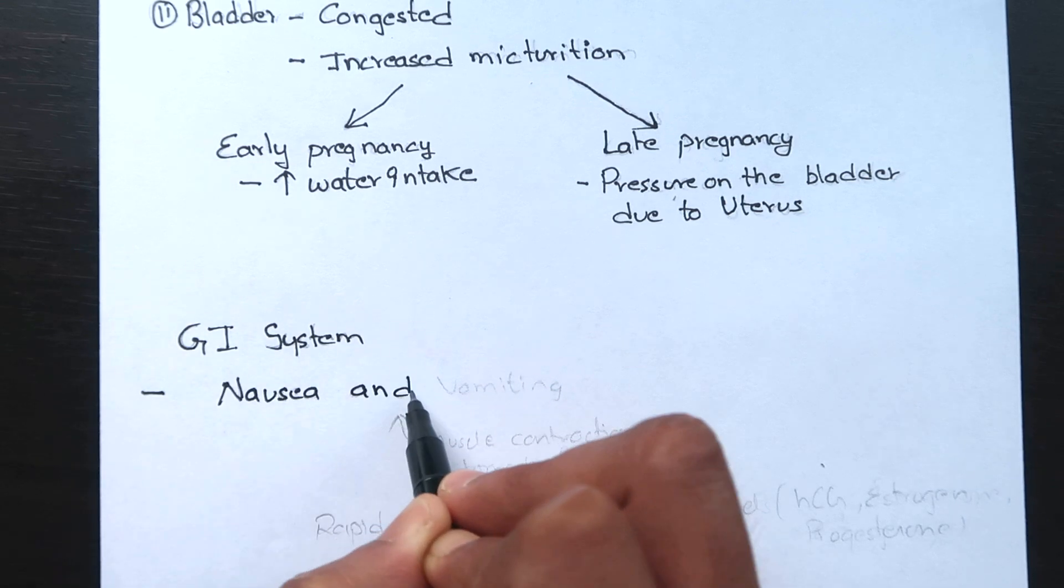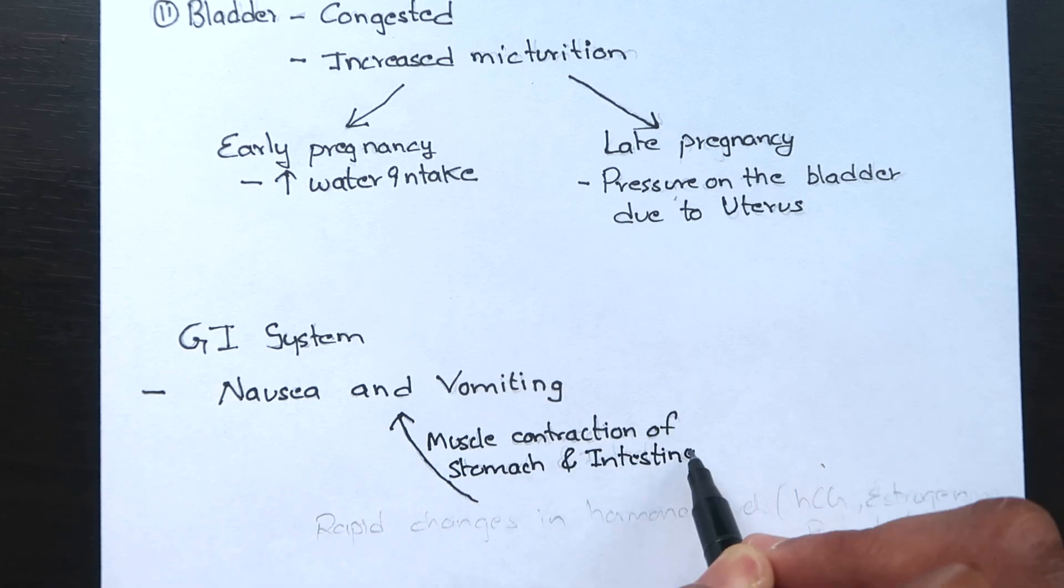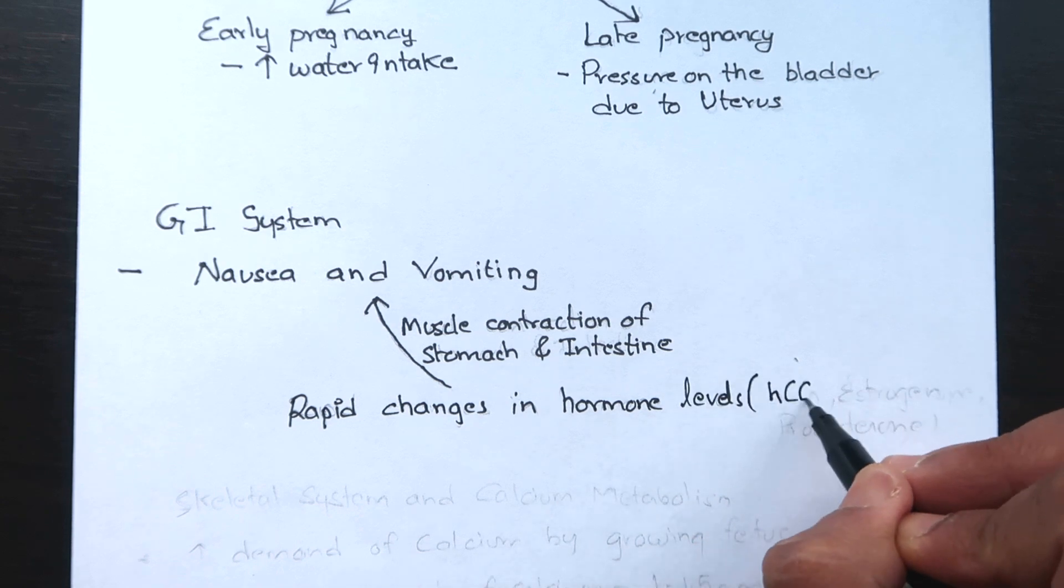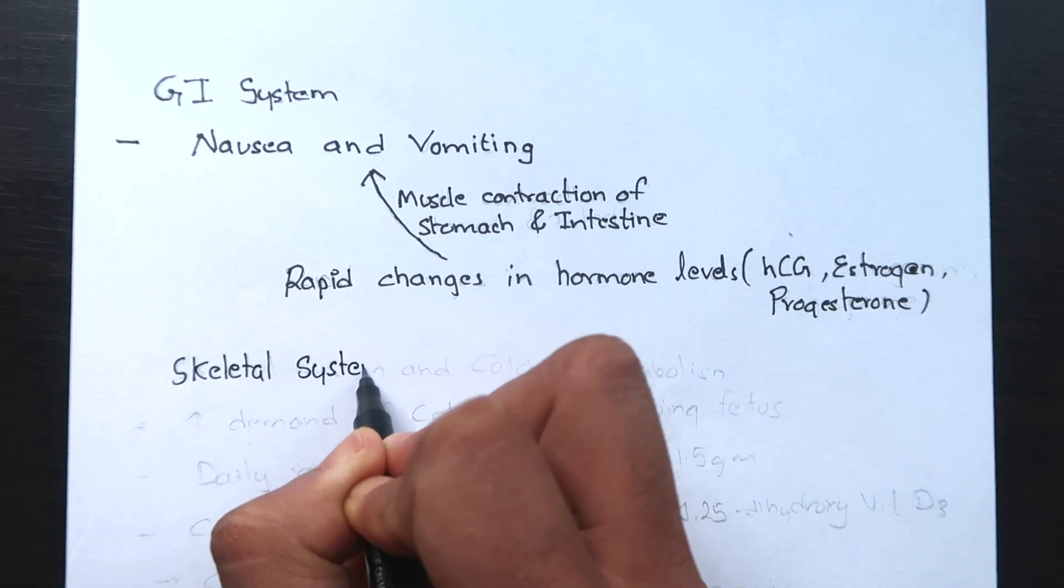Nausea and vomiting in pregnancy is due to rapid fluctuation in the hormonal levels during pregnancy.